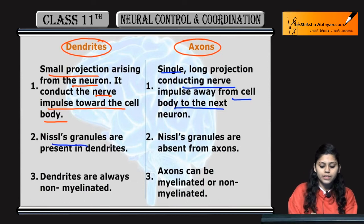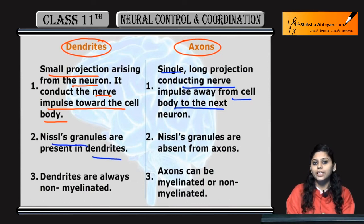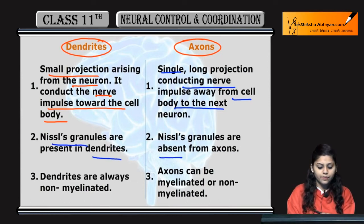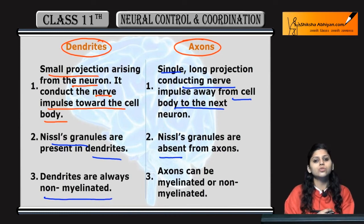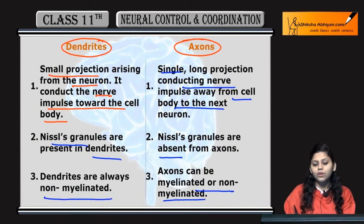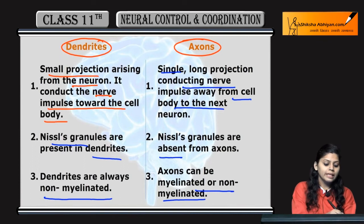Nissel granules present hote hain dendrites mein, whereas absent in case of axons. Dendrites are always non-myelinated, whereas axons can be myelinated or non-myelinated.